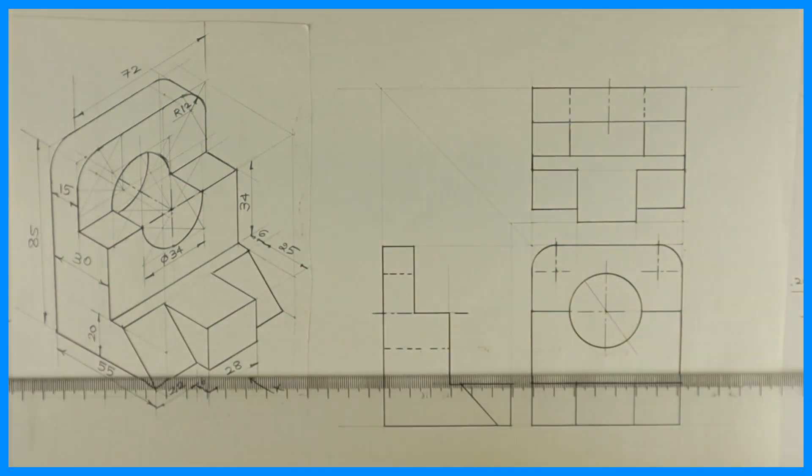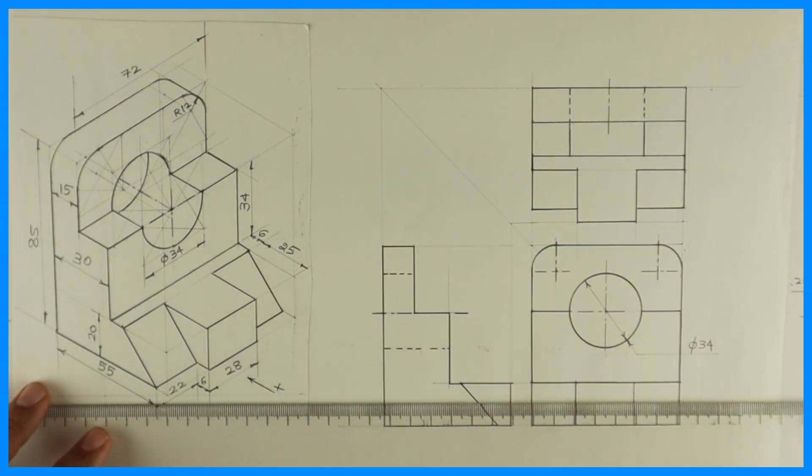So we are done with front view, top view, and side view of this object. Then we can do dimensioning and labeling.